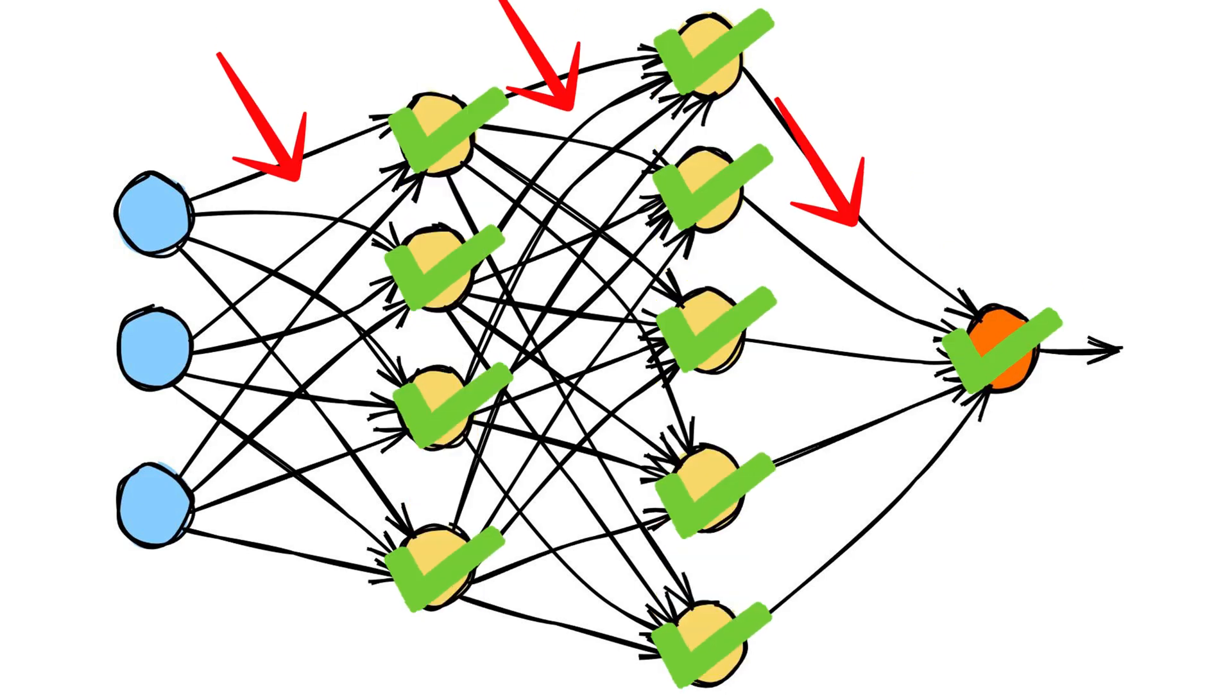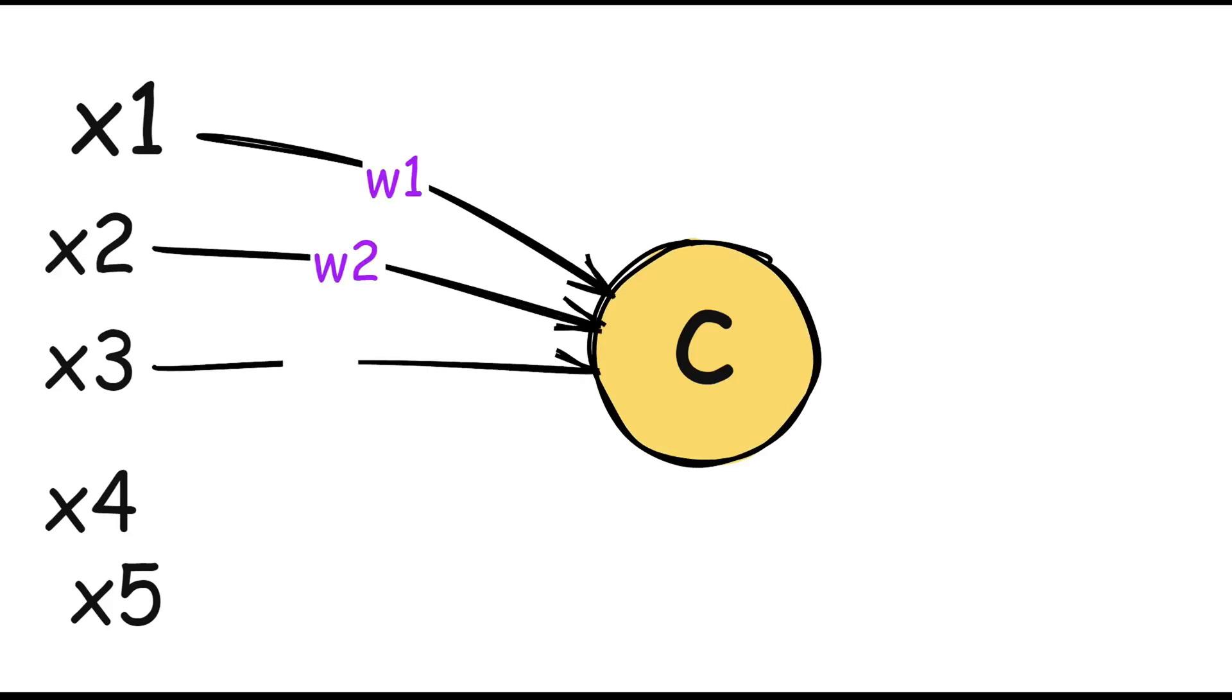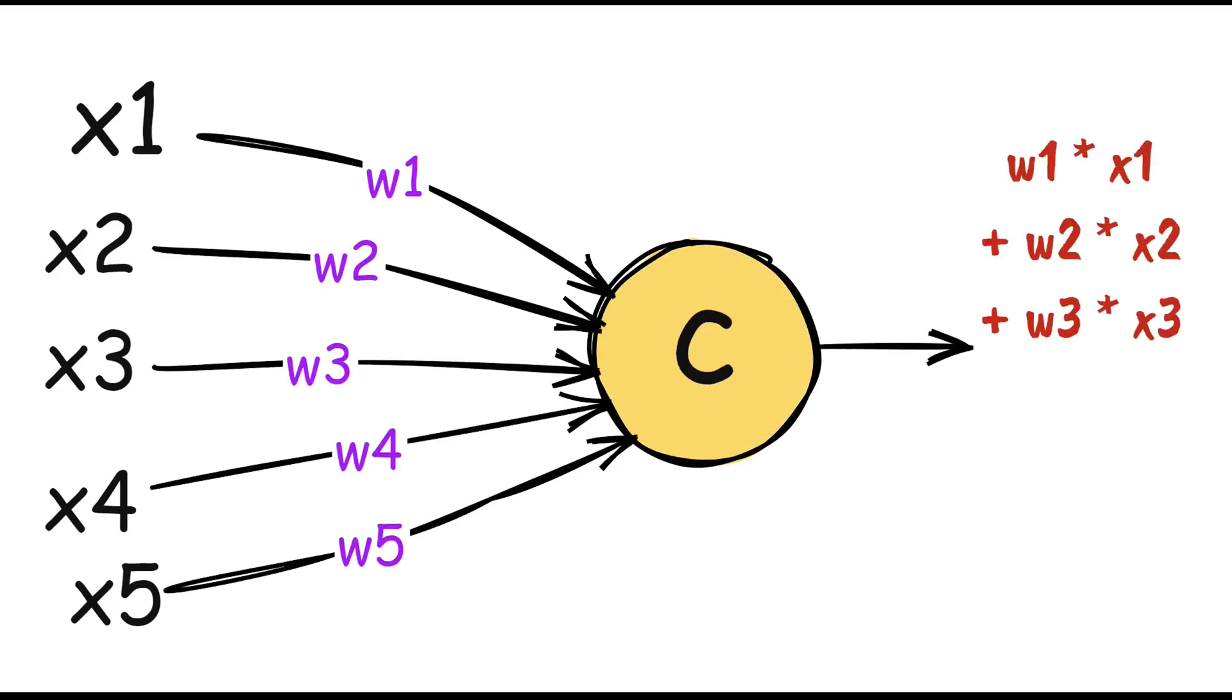Each neuron has an associated weight it uses to multiply an input value. So, if a neuron receives an input vector of length 5, there will be 5 weights maintained by that neuron. Each neuron also has a bias.